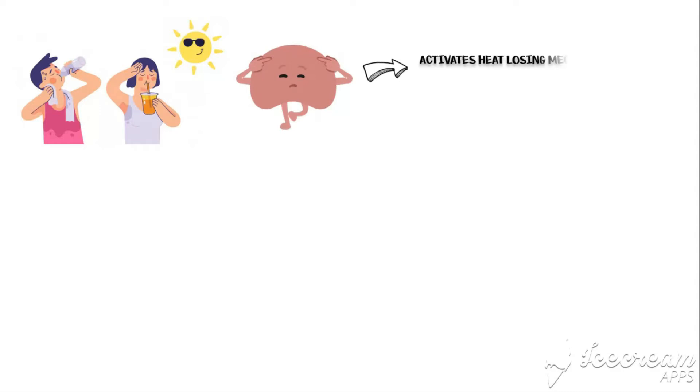When body temperature is increased, like when we are exposed to hot weather, it is detected by the hypothalamus. Then it quickly activates heat losing mechanisms to get rid of excess heat, and at the same time it inhibits the heat producing mechanisms in our body, because now the body temperature is high and it should be brought back to normal.